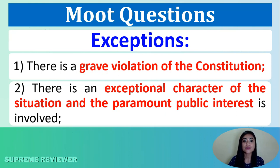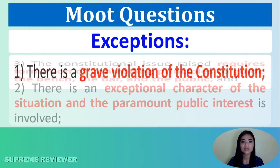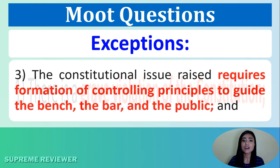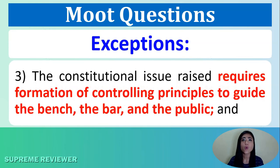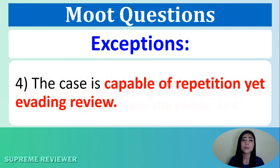There is a grave violation of the constitution. There is an exceptional character of the situation and the paramount public interest is involved. The constitutional issue raised requires formation of controlling principles to guide the bench, the bar, and the public. And the case is capable of repetition yet evading review.